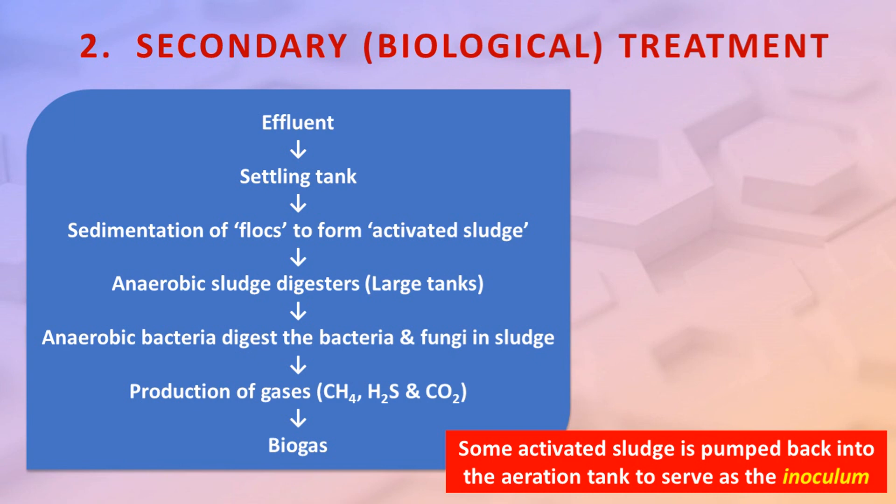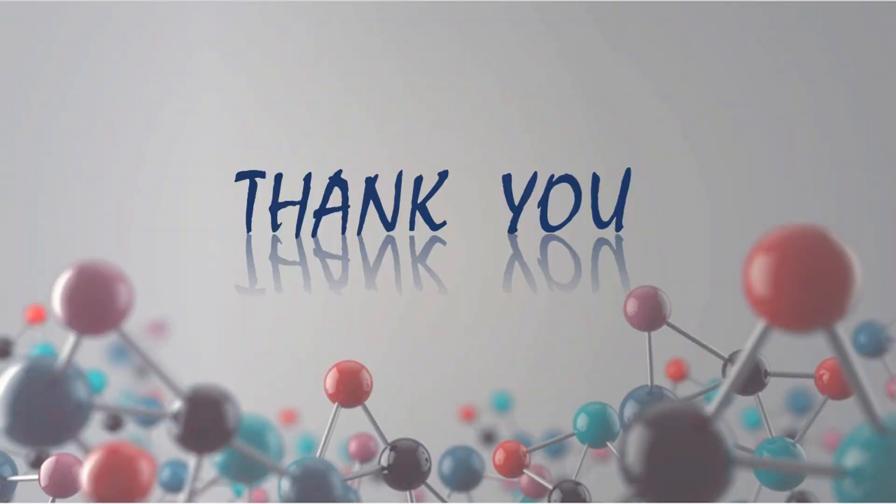In the anaerobic sludge digesters, anaerobic bacteria digest the bacteria, fungi, and sludge, leading to the production of gases like CH4, H2S, and CO2, collectively called biogas. Some activated sludge is pumped back into the aeration tank to serve as the inoculum. Thank you for watching this video.